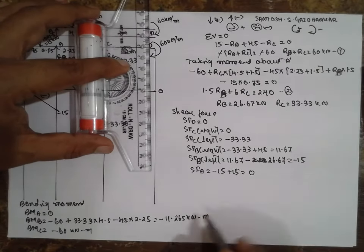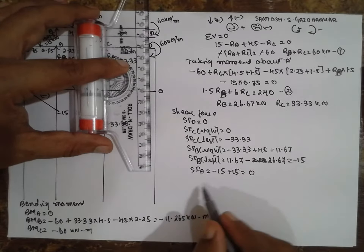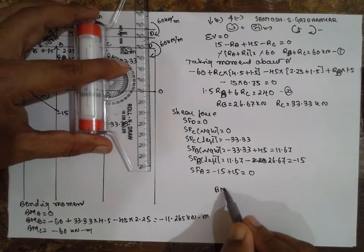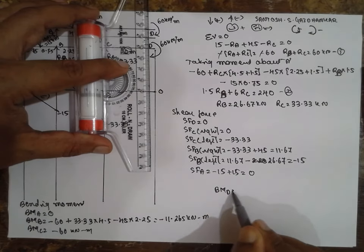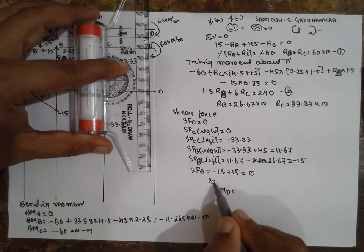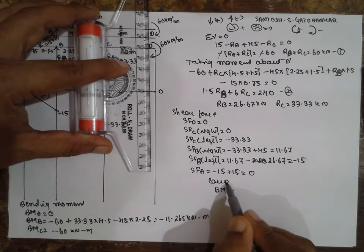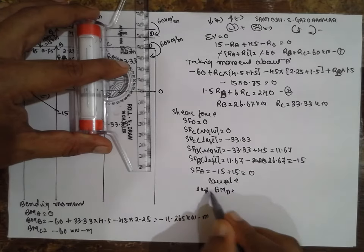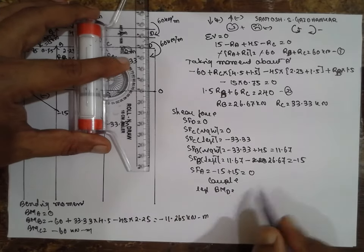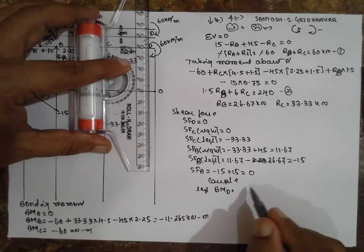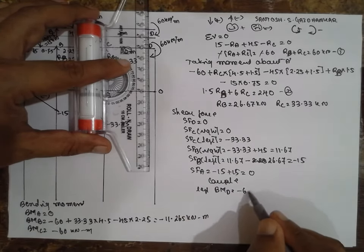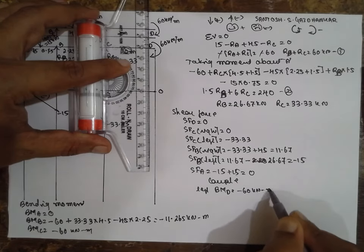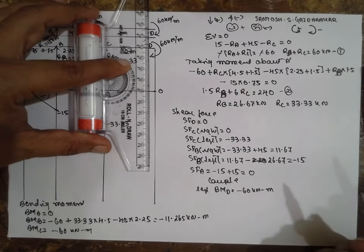At D, since it is a couple, you have to consider left and right. On the left side it is minus 60 kNm.